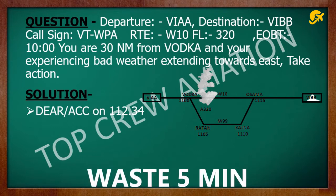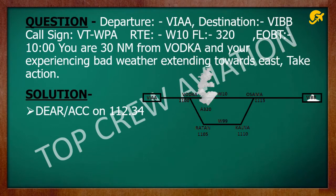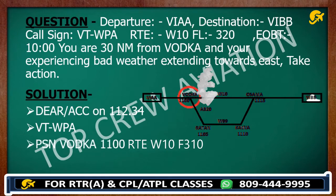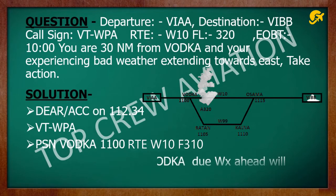Second point: who are you? Victor Tango Whiskey Papa Alpha. Position: Vodka, 1100. Route is Whiskey 10. Flight level 310. Assume we are not on a westerly track — that's why we are taking an odd flight level.